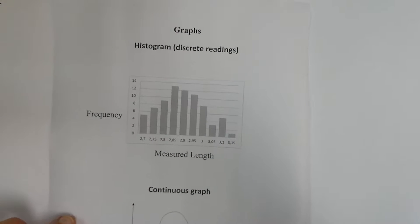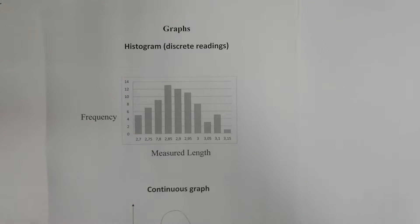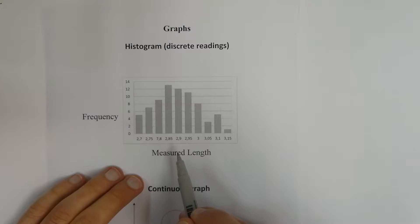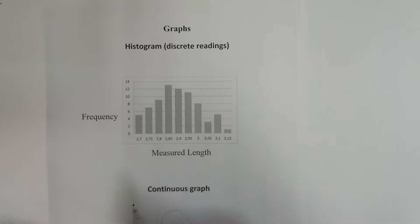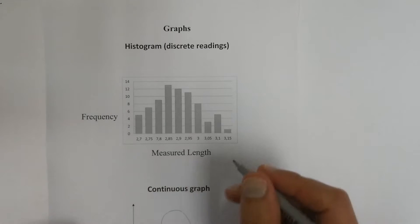We often do these analyses using graphs, and there are two graphs that you will probably come across. The first one is a histogram graph, which is for discrete readings. In this specific chart you will see that a certain length was measured using a specific measuring instrument. Let's say this is all in meters.